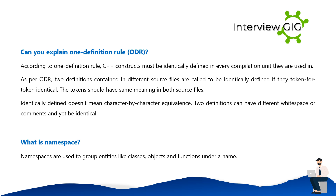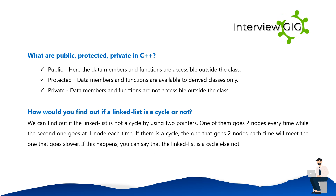What is a namespace? Namespaces are used to group entities like classes, objects, and functions under a name. What are public, protected, and private in C++? These are three access specifiers. Public: data members and functions are accessible outside the class. Protected: data members and functions are available to derived classes only. Private: data members and functions are not accessible outside the class.